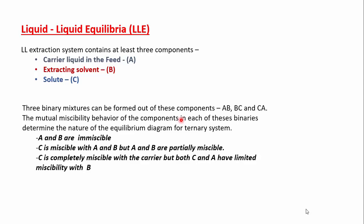To design a liquid-liquid extraction process or equipment, liquid-liquid equilibrium data are needed. In an LLE system there are at least three components: component A (carrier liquid in the feed), component B (extracting solvent), and component C (solute). The feed contains A and C, and solvent B is added to separate the solute into extract and raffinate phases. These three components form three binary mixtures — AB, BC, and CA — whose mutual miscibility behavior determines the nature of the equilibrium diagram for the ternary system.